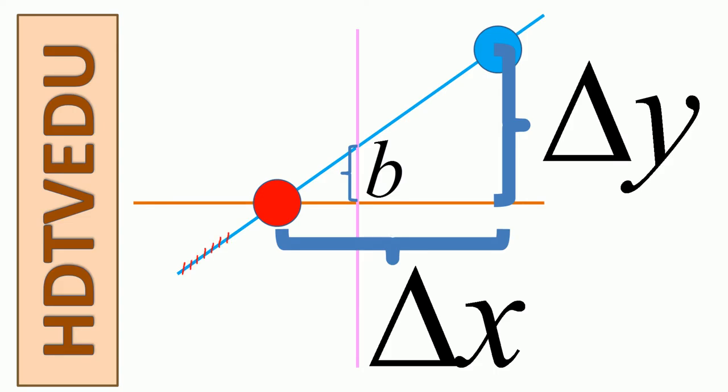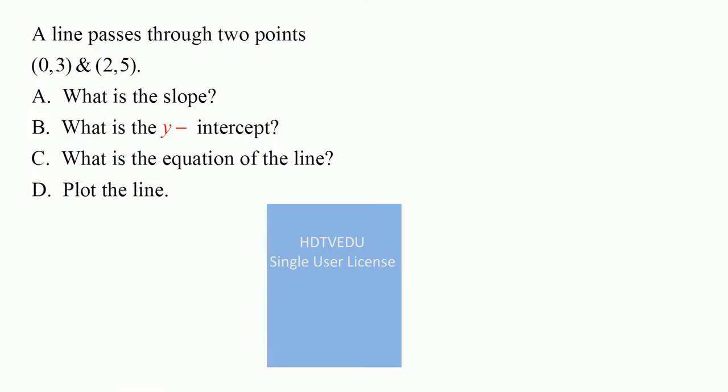Here we have a line. The line passes through two points. Between those points we have delta y and delta x. A line passes through two points: (0,3) and (2,5).